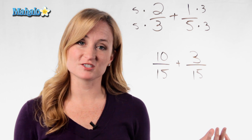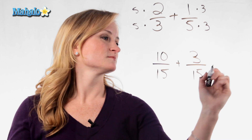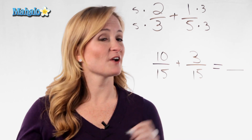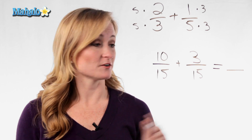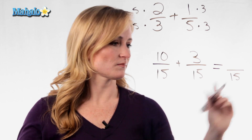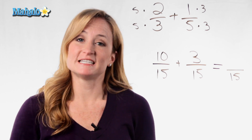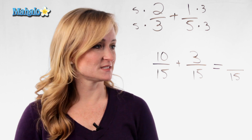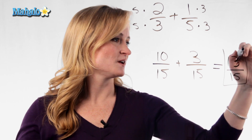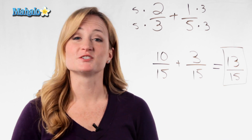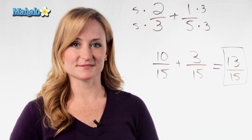Now we have two fractions that actually can be added. In adding fractions, you don't add the denominator — you leave it as is. So it's 15. Now we just need to add the top. 10 plus 3 is 13. So your answer to 2/3 plus 1/5 is 13 over 15.